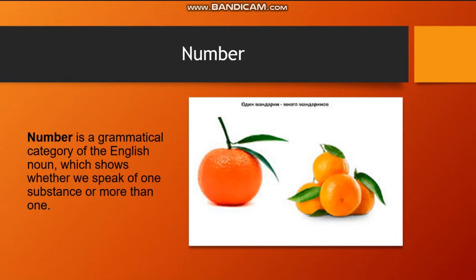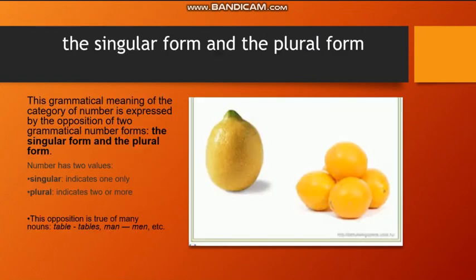Number is a grammatical category of the English noun, which shows whether we speak of one substance or more than one. This grammatical meaning of the category of number is expressed by the opposition of two grammatical number forms: the singular form and the plural form. Number has two values: singular indicates one only, plural indicates two or more.